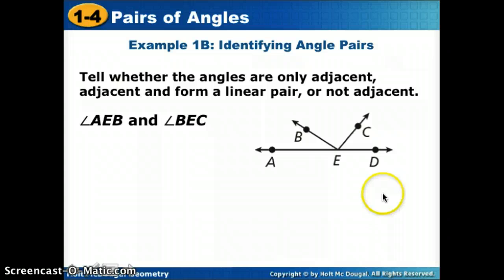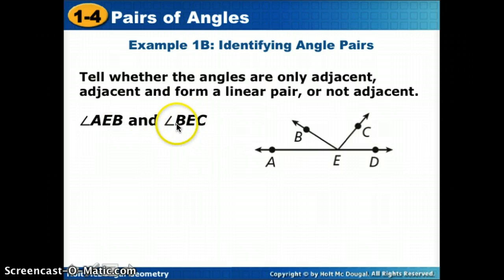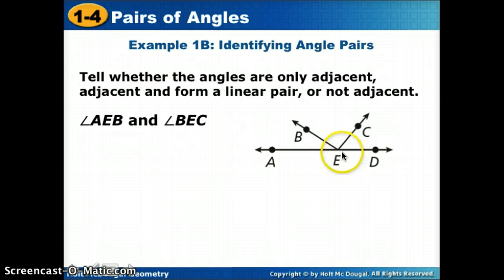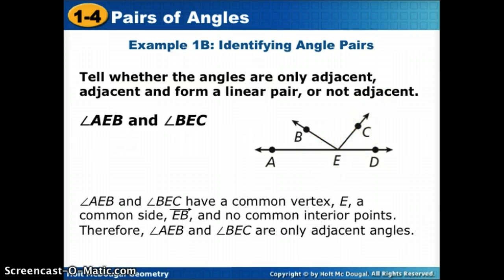Here's another example: angles AEB and BEC. First, are they adjacent? They both have EB in their names, so they share that ray. They don't share any interior points, so they are adjacent. Do they form a linear pair? AE goes to the left and EC goes up to the right — they don't go in opposite directions. So these are adjacent, but not a linear pair. Only adjacent.